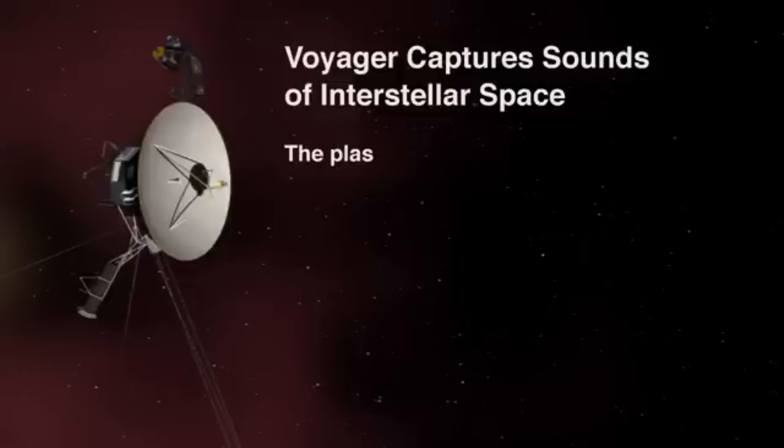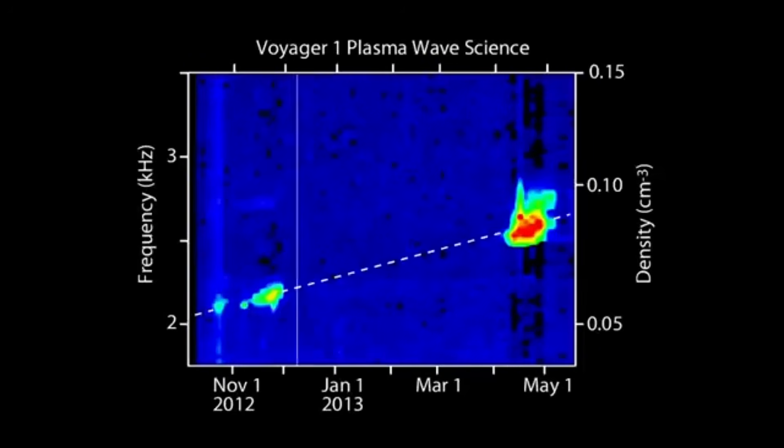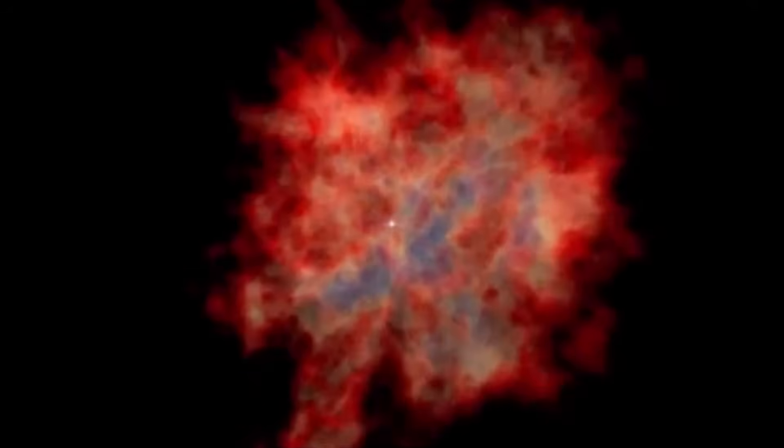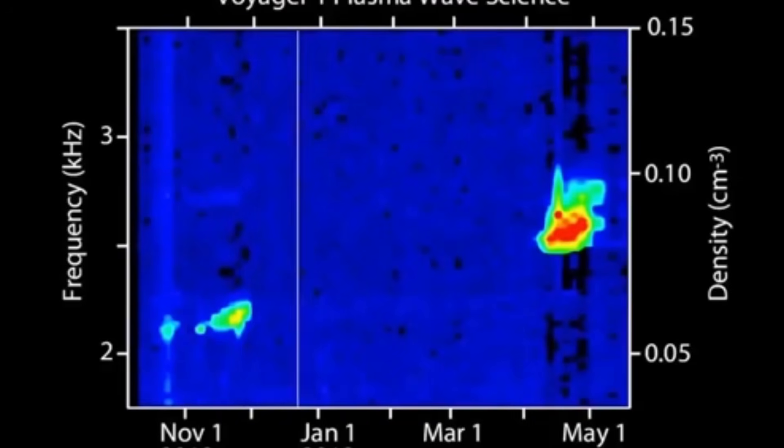Voyager 1's plasma wave subsystem recently detected a series of unusual oscillations in the interstellar medium—ripples in the thin gas between stars that don't match any known model of interstellar space. These waves appear at regular intervals but with frequencies that defy explanation based on our current understanding of plasma physics.